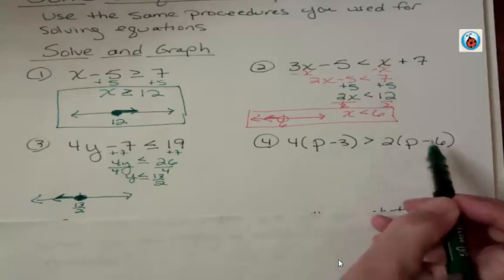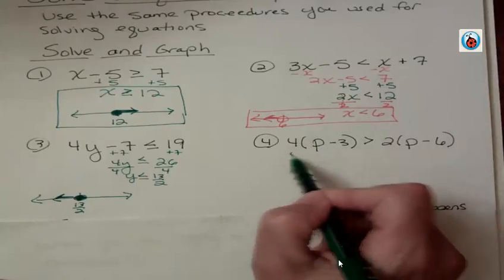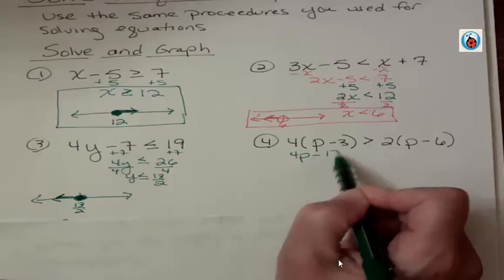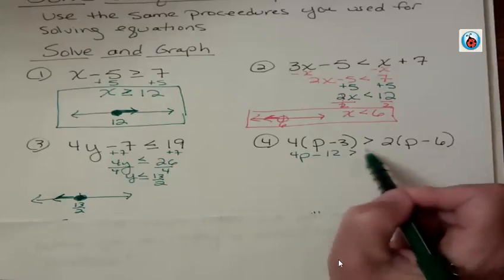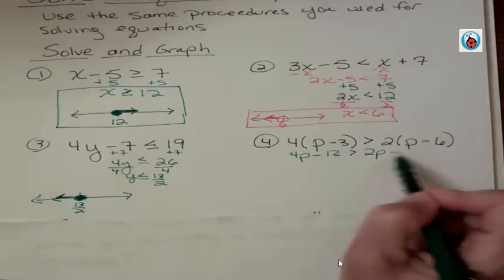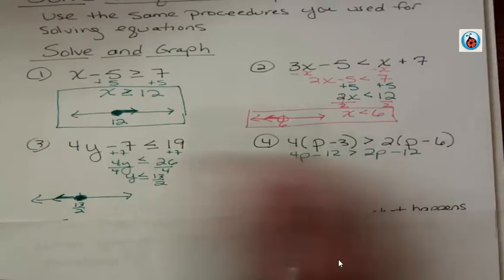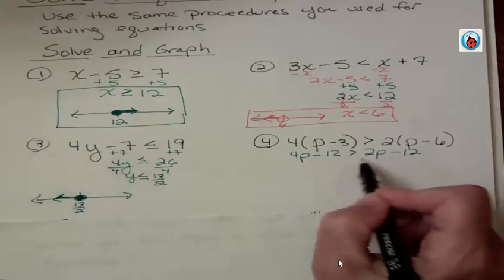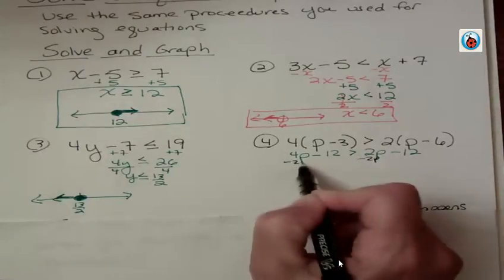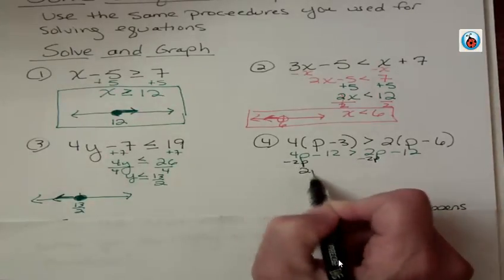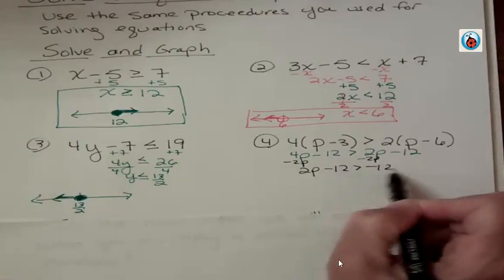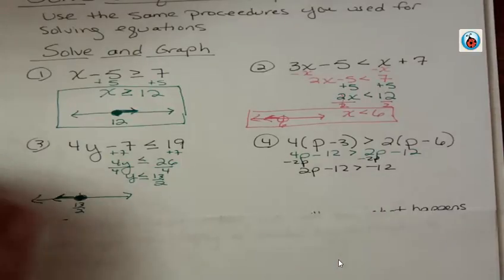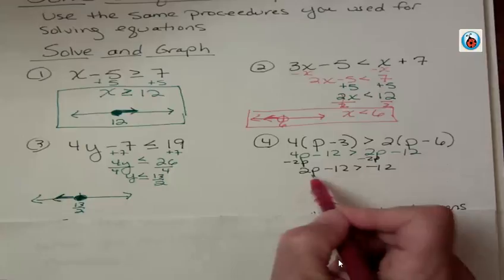Okay, going over here, we're going to distribute. We have 4 times p and 4 times 3. 2 times p and 2 times 6. Subtracting the p's, 2p. 4p minus 2p. And then we're going to add 12 to both sides because we're trying to isolate that variable.